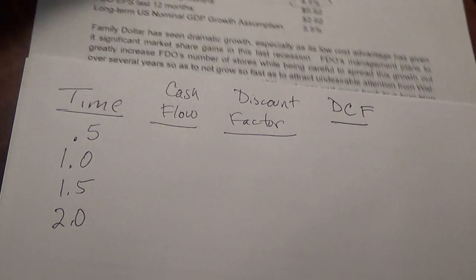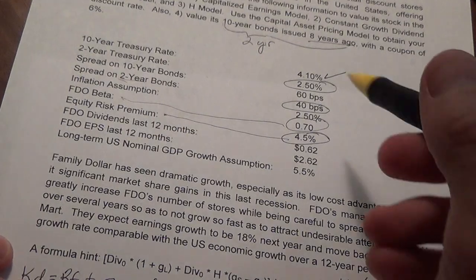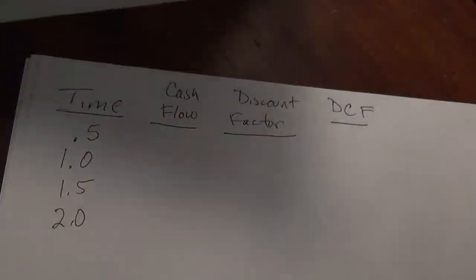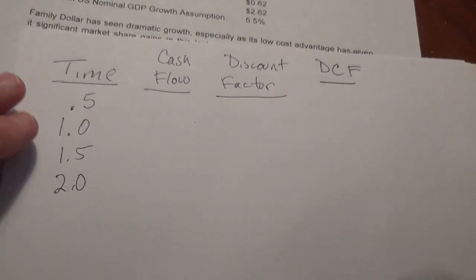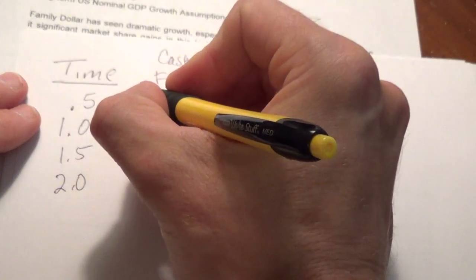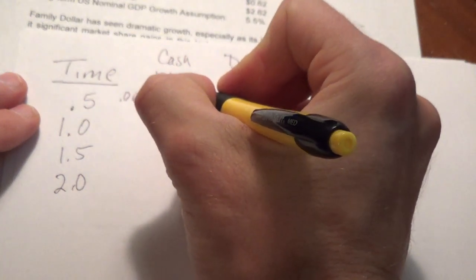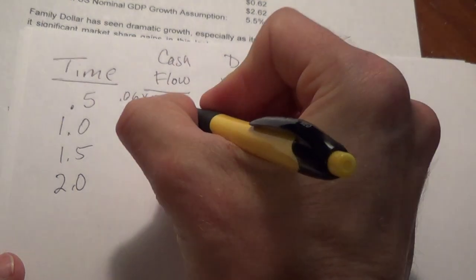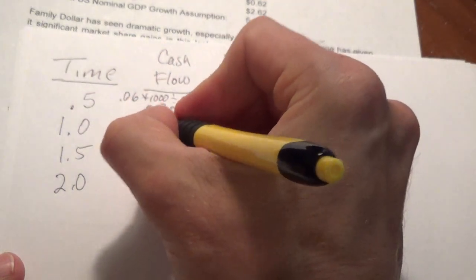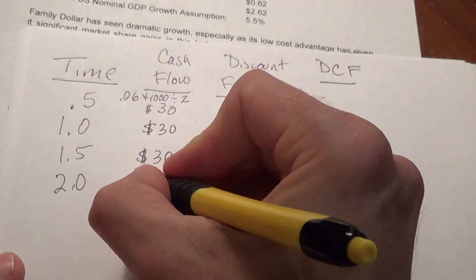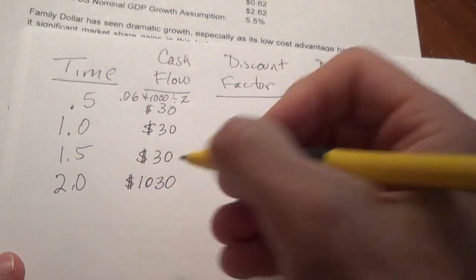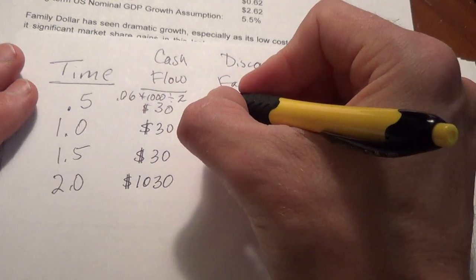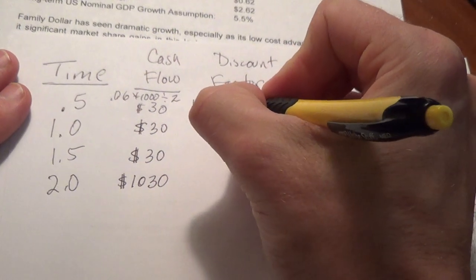What is our cash flow? The bond has a coupon of 6%. The cash flow is .06 times $1,000 divided by 2 — we assume a bond face value of $1,000. That gives us cash flows of $30 at six months, $30 at one year, $30 at one and a half years, and then at the very end we get our $1,000 back plus that last coupon, so $1,030.